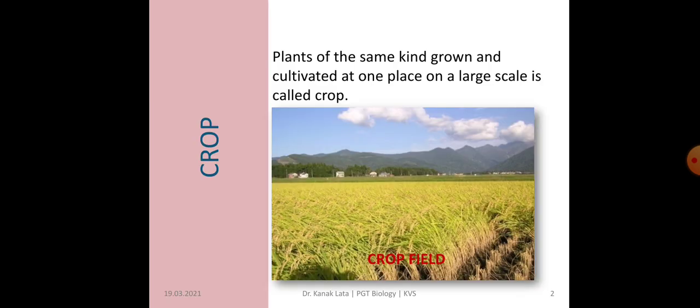First, it is about Crop. When plants of the same kind are grown and cultivated at one place and on a large scale, then it is called a Crop. Here you can see the crop field of wheat.